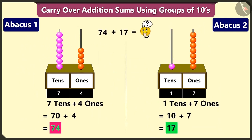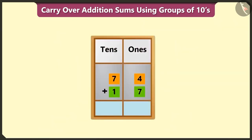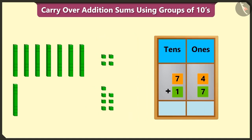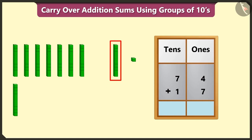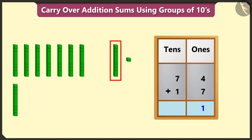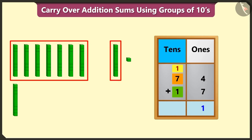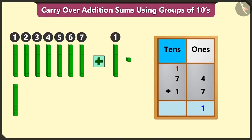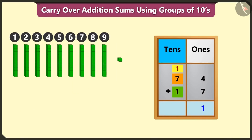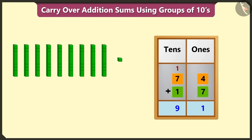Now, we have to add 74 and 17. We have to write both numbers in the ones and tens boxes. Adding 4 and 7 in the ones box makes 11. 11 means 1 ten and 1 one. We have to write 1 in the ones box and carry over 1 ten. Now, adding 7 and the carry over 1 equals 8, and adding 1 to 8 equals 9. So, we write 9 in the tens box. 74 added to 17 gives a total of 91.